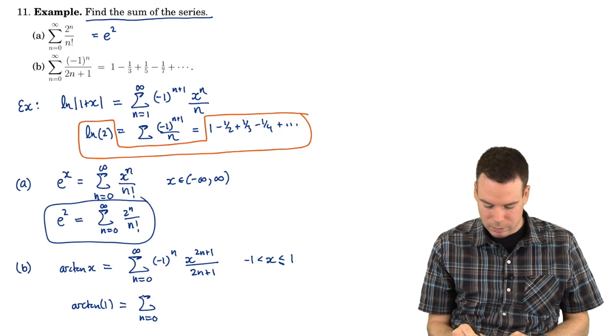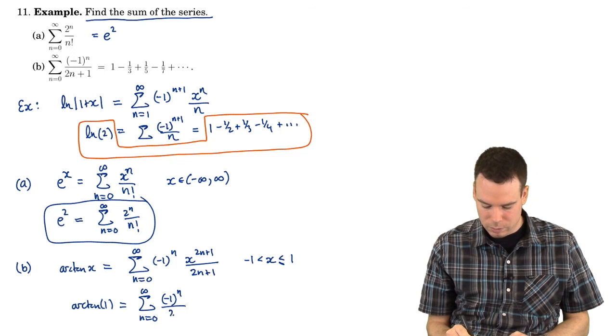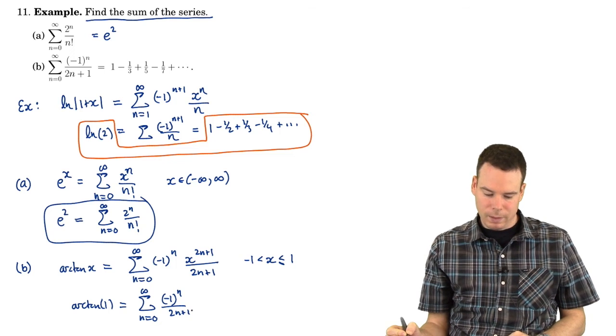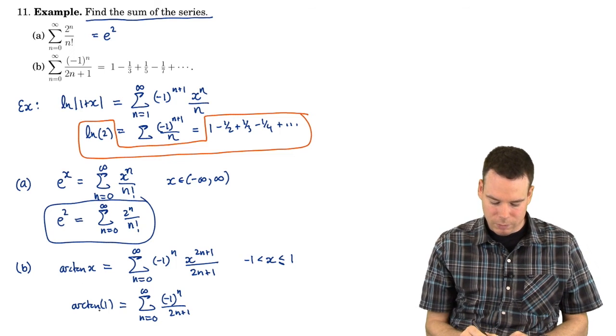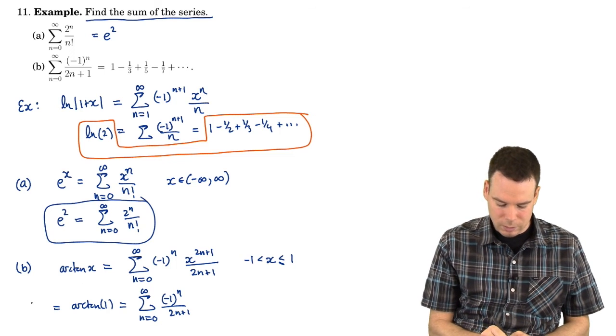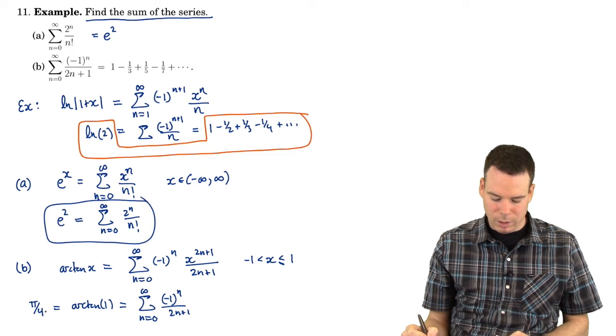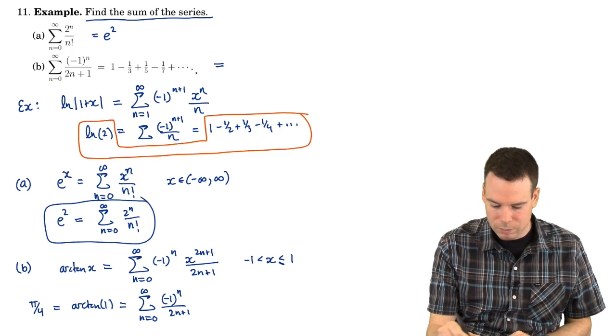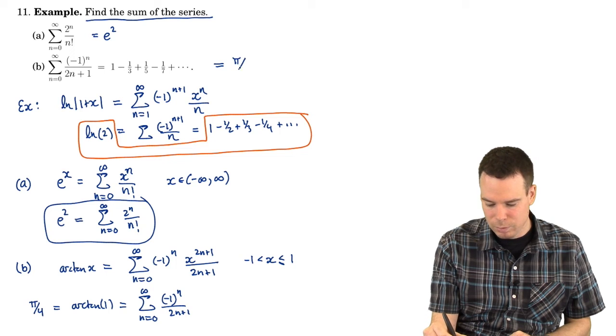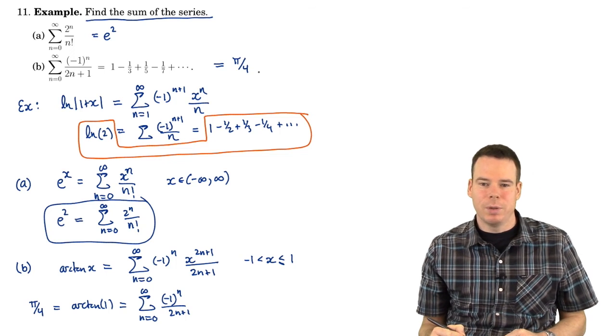So this is equal to negative 1 to the n over 2n plus 1. That's the series I wanted to know the value of. I find it's arctan of 1, so that is therefore pi by 4. So we just worked out the value of this series. The sum of that series is pi by 4.